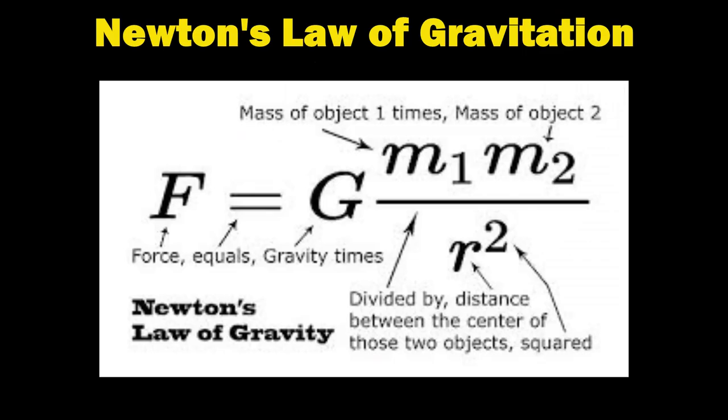The equation of law of gravitation is: F equals G m1 m2 over r squared. If you remember the last example, m1 is the mass of Earth, m2 is the mass of Mars, and F is the gravitational force.